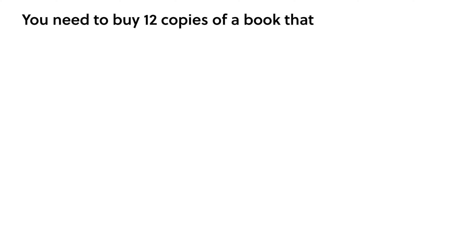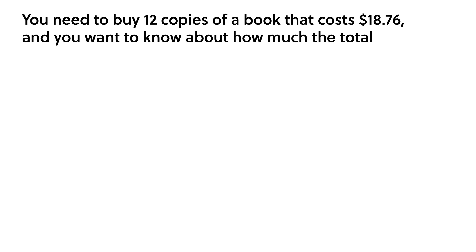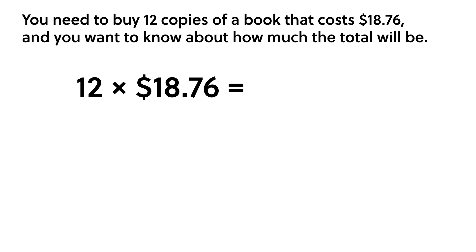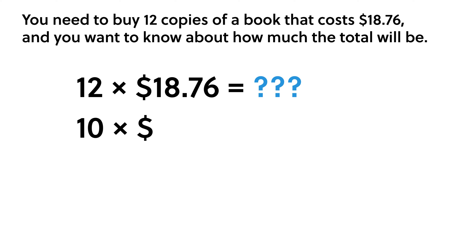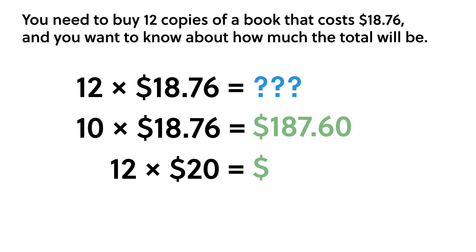For example, suppose you need to buy 12 copies of a book that costs $18.76 and you want to know about how much the total will be. The exact answer is 12 times $18.76, but that's hard to do in your head. So you might estimate by rounding 12 down to 10 and calculating 10 times $18.76 equals $187.60. Or you might estimate by rounding $18.76 up to $20 and calculating 12 times $20 equals $240.